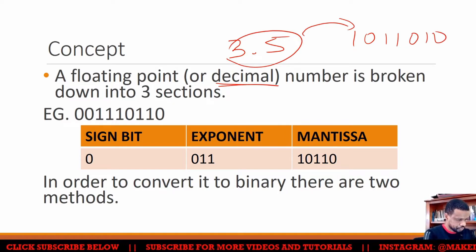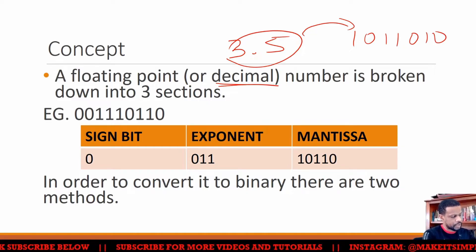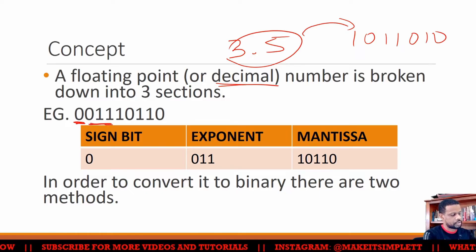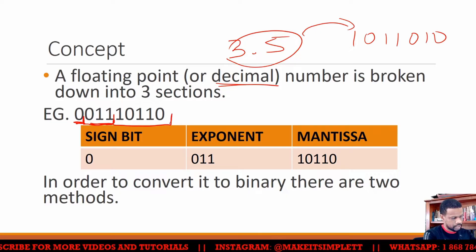So what they have is three parts of a number. They have a sign bit, then they have an exponent, and then they have something called a mantissa.